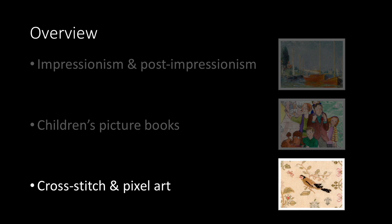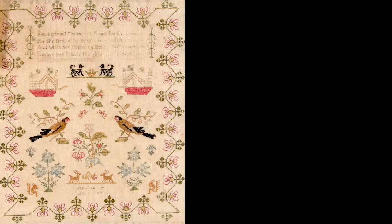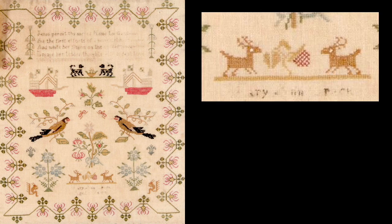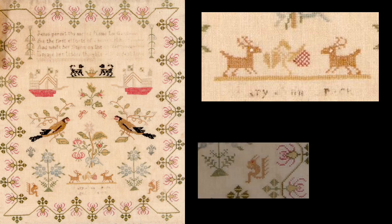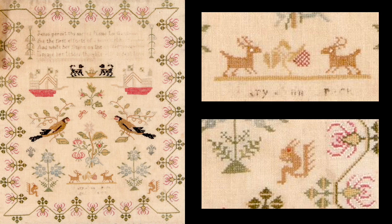Let's now move on to cross-stitch and how that's influenced pixel art in computer graphics. Cross-stitch is essentially pixel art from way before there were computers — there's a limited resolution because you can only get down to the resolution of a single stitch. For example these two deer: you can tell they're deer, they have antlers, their front feet are not hitting the ground. There's not a lot of detail but you can tell what sort of animal they are.